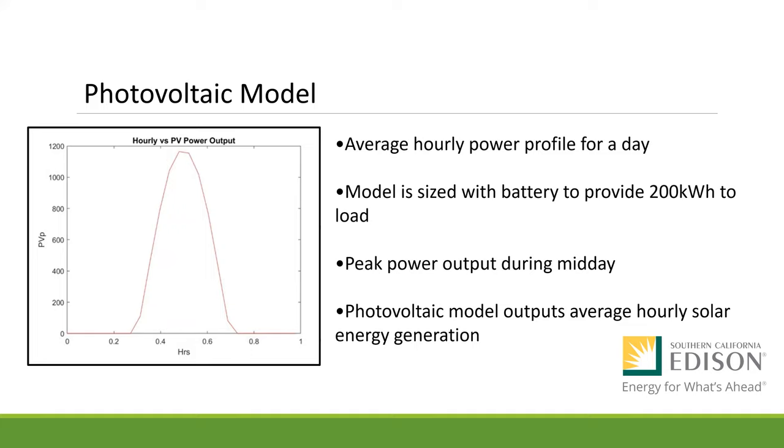The photovoltaic model outputs an average hourly solar energy generation. The plot reveals that the PV power output increases and is reaching peak power during the midday. This curve was considered for the operation scheme, which we will discuss later.